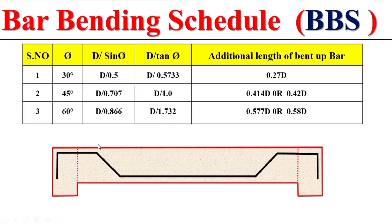Also note that if the crane bar is bent at a 30-degree angle, the incline length value is different. If bent at 45 degrees, another value applies. And if bent at 60 degrees, the incline length has yet another value. These different incline length formulas correspond to different bending angles.